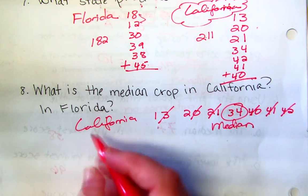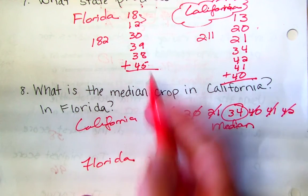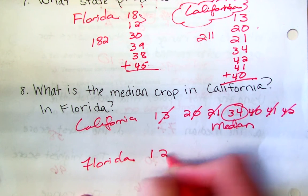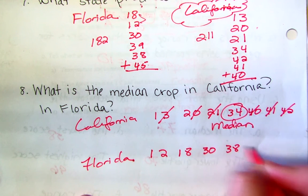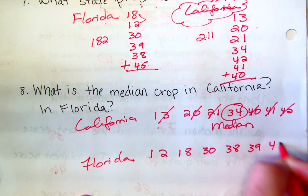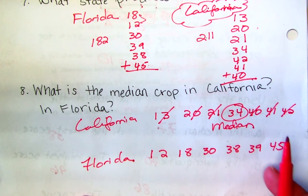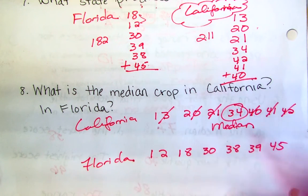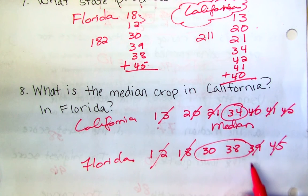And then let's take a look at Florida. I have them listed up here. I'm just going to put them in order from least to greatest. 12, 18, 30, 38, 39, 45. One from the left, one from the right, one from the left, one from the right. So I'm stuck in between these two.